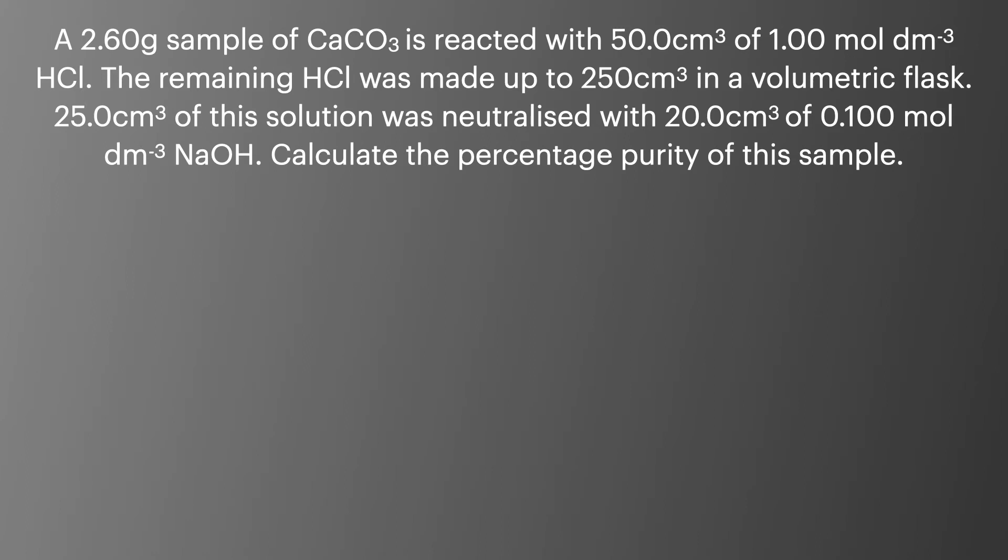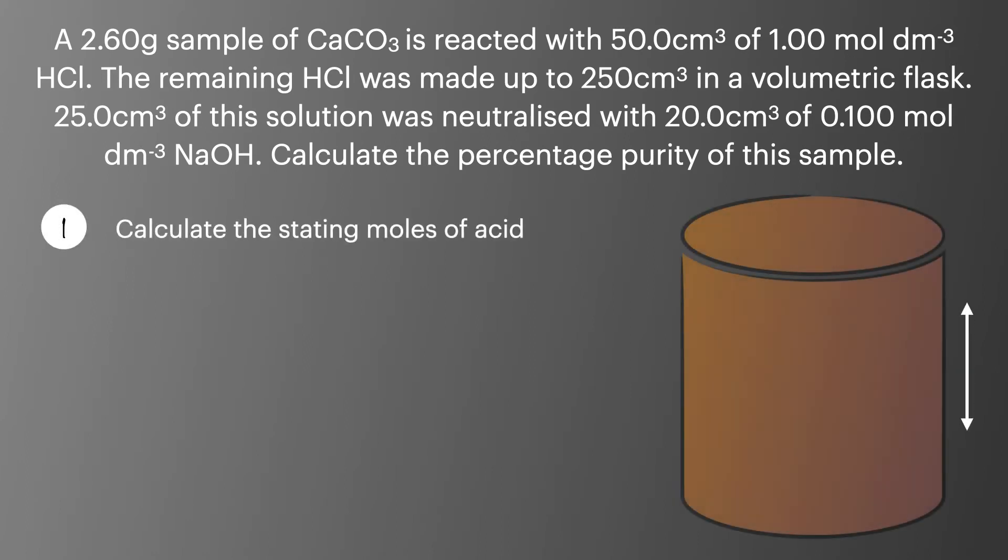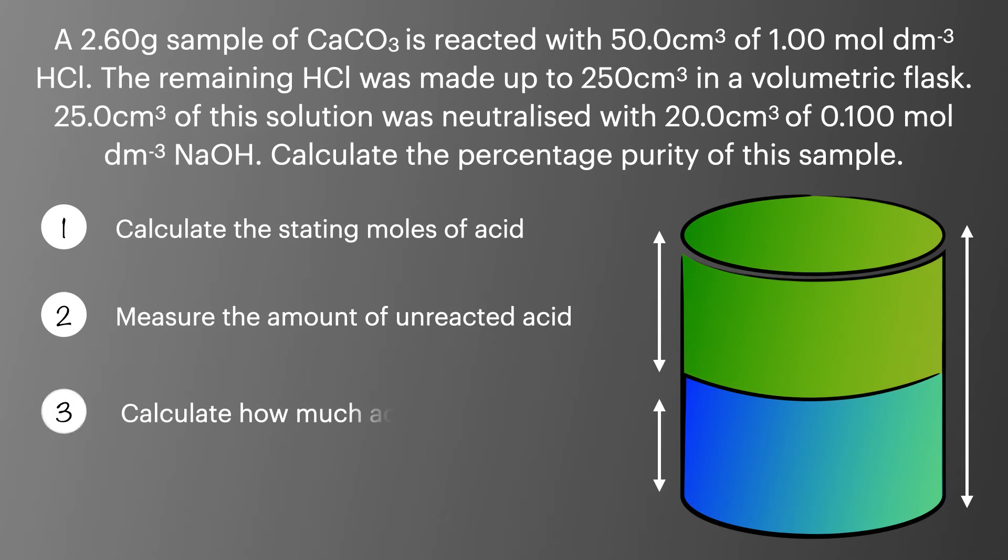So that's the process but in terms of the calculations what are we going to need to do. First we're going to calculate the starting moles of the acid. Second we're going to measure the amount of unreacted acid using a titration. Then we're going to calculate how much acid reacted and finally calculate the moles of the starting substance.